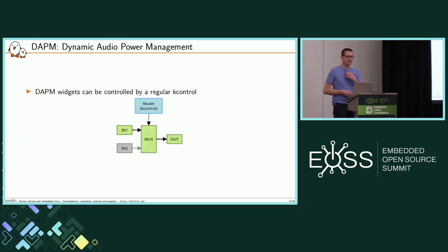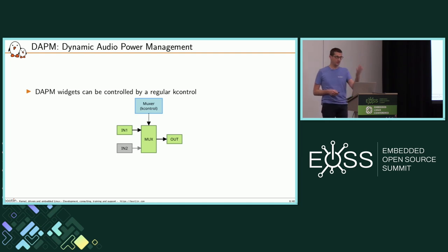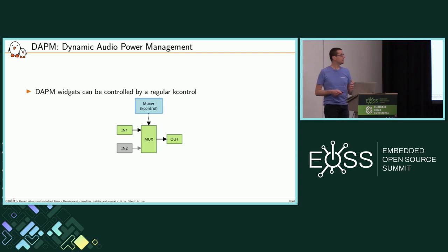For example, if you want to capture from an analog input, you need to enable the ADC. If you capture from a digital microphone, you don't. So DAPM will automatically enable and disable the ADC. You don't have to write any code or do anything in user space to enable and disable DAPM. This works thanks to the key controls, which are user-exposed and control the path and some components.